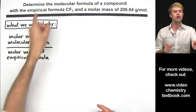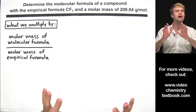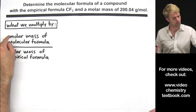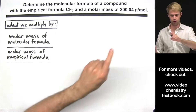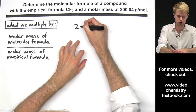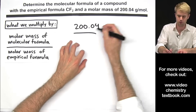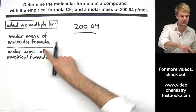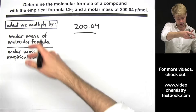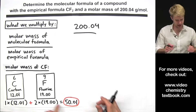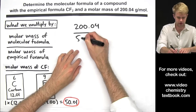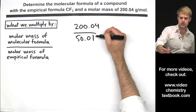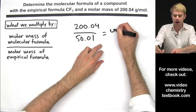We want to find the number to multiply the empirical formula by. Here's one way to get it: we use this equation where we take the molar mass of the molecular formula — in this case 200.04 — and divide it by the molar mass of the empirical formula CF2, which is 50.01. We divide 200.04 by 50.01 and we get 4.